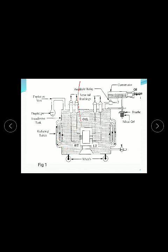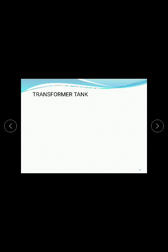Also here - this is the total transformer tank. This is the explosion vent and this is the diaphragm. These are the two wheels and this is the valve when we need to get oil outside. So these are the total parts generally of the transformer tank.